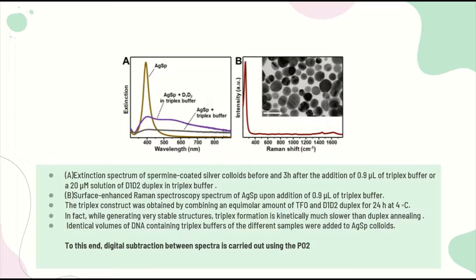To this end, digital subtraction between spectra is carried out using the PO2 peak. In our specific case, since duplex and triplex structures possess different molar content of phosphate groups, the intensity of their corresponding SERS spectra was proportionally adjusted to the peak height of the phosphate band. This allows extracting a difference spectrum D1-D2 versus TFO-D1-D2, which primarily represents the vibrational pattern of TFO in the triplex structure and can be meaningfully compared to the SERS profile of the unbound TFO strand.